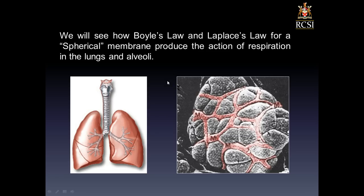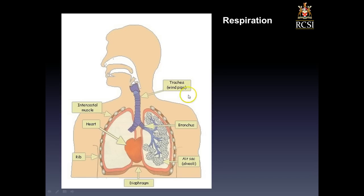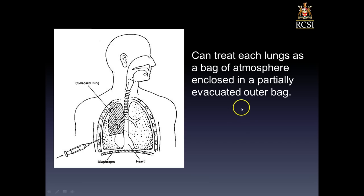Now we're going to see how Boyle's Law and Laplace's Law combine to get air in and out of the alveoli. Here we have our respiratory system: the trachea, which breaks into the bronchus, then the bronchi, and ultimately the alveoli. We can treat each lung as being contained in its own separate evacuated space. The space between the outer surface of the lung and the inner surface of the thoracic cavity is at lower than atmospheric pressure — a slight vacuum — and each lung is inflated within this space.